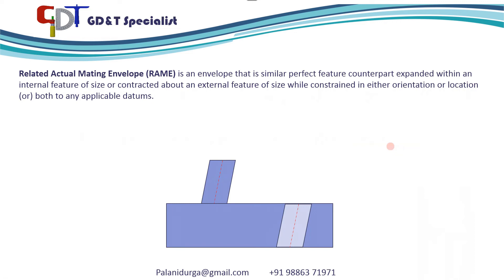Related actual mating envelope is an envelope that is a similar perfect form counterpart expanded within an internal feature of size or contracted about an external feature of size, while constrained in either orientation or location or both to any applicable datums. This is the definition given in the standards.